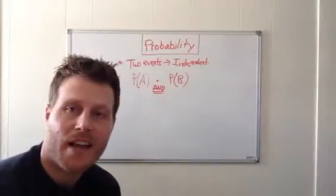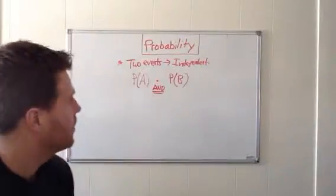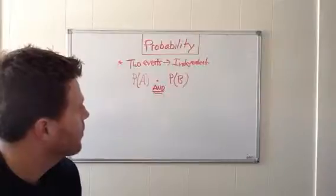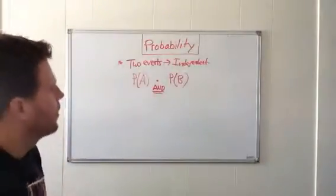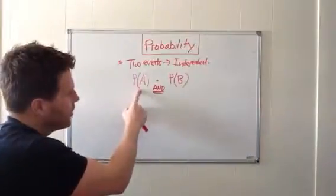All right, we're going to talk about probability today, specifically the independent probability calculation when two events are happening at the same time. We see the word 'and' right here, so the probability of